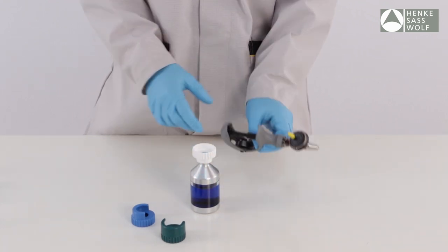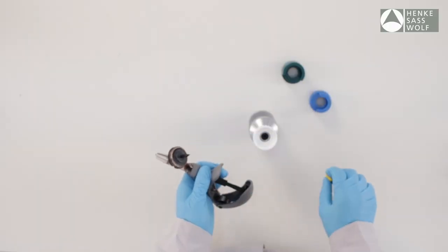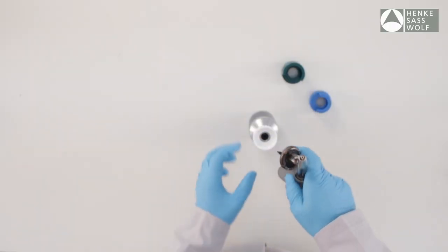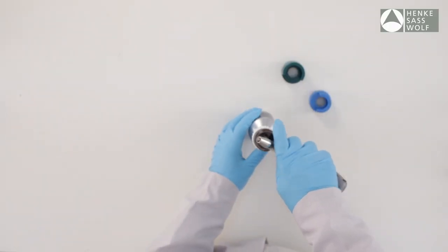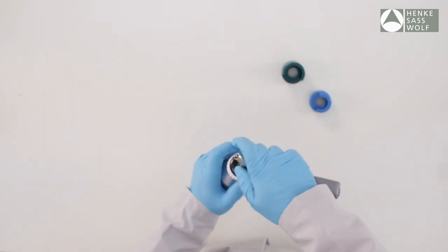Insert the bottleneck into the universal adapter. Take off the security cap of the syringe. Stick the spike into the center of the rubber cap of the bottle. Turn the bottle with the corresponding adapter until it is secure.